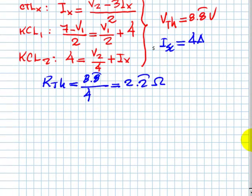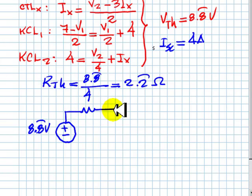To complete this exercise, we draw the circuit. The Thevenin voltage, 8.8 volts. And the Thevenin resistor, 2.2 ohms.